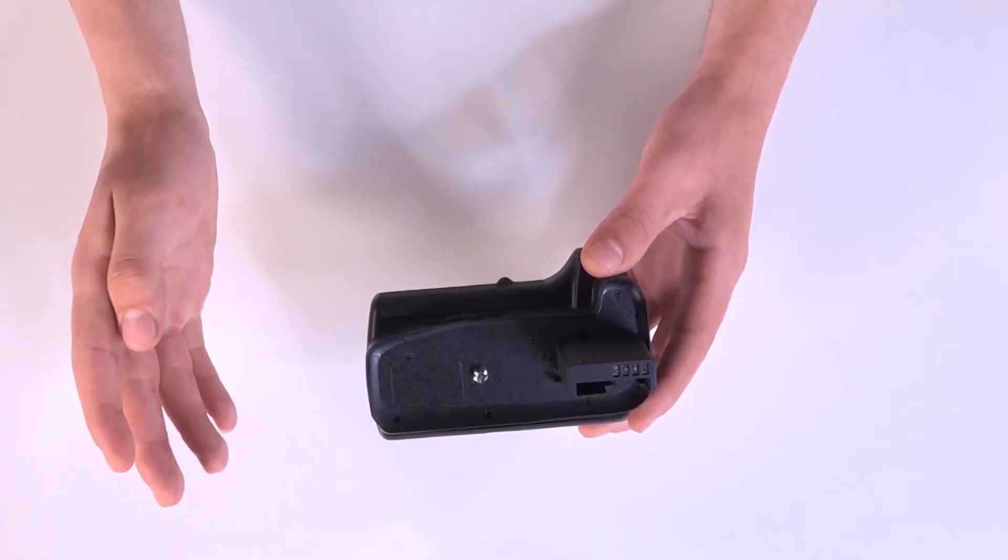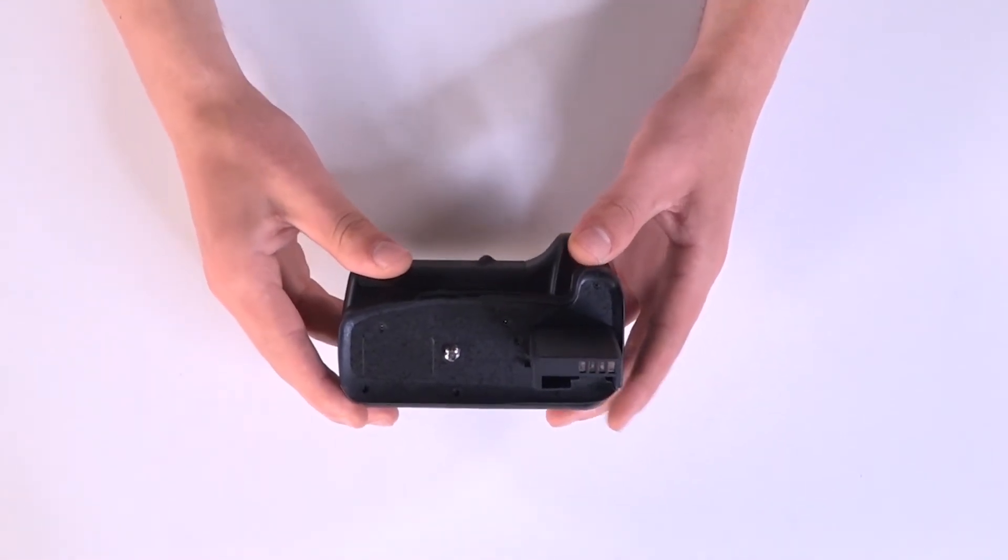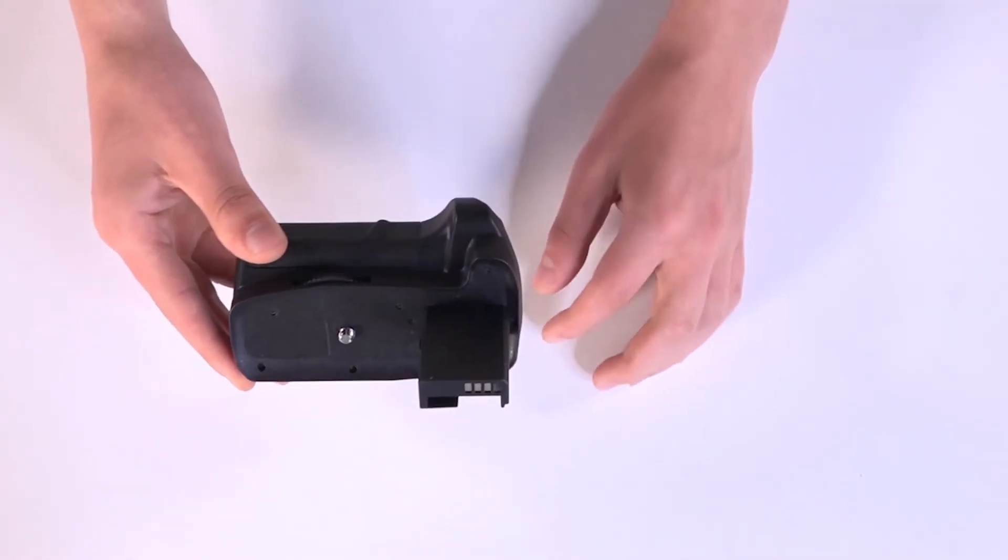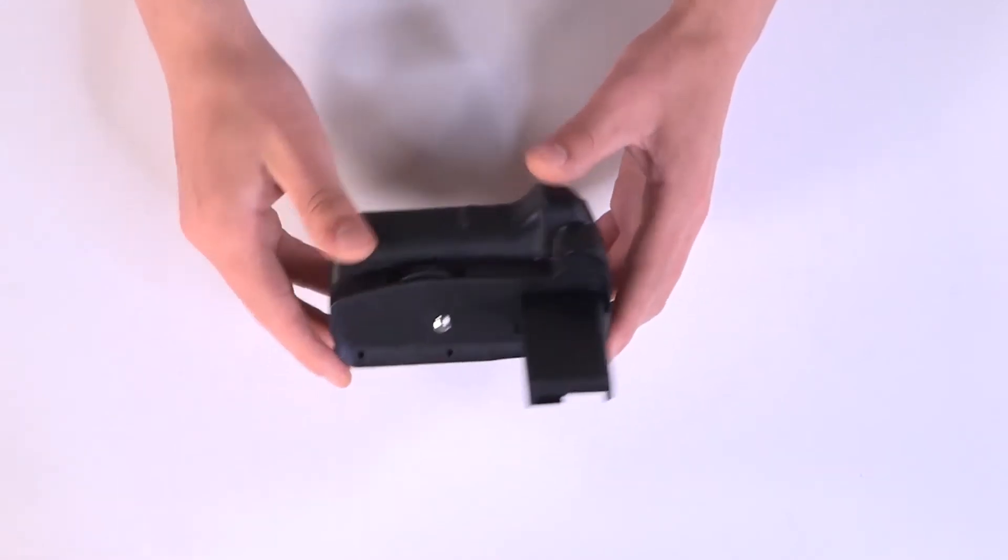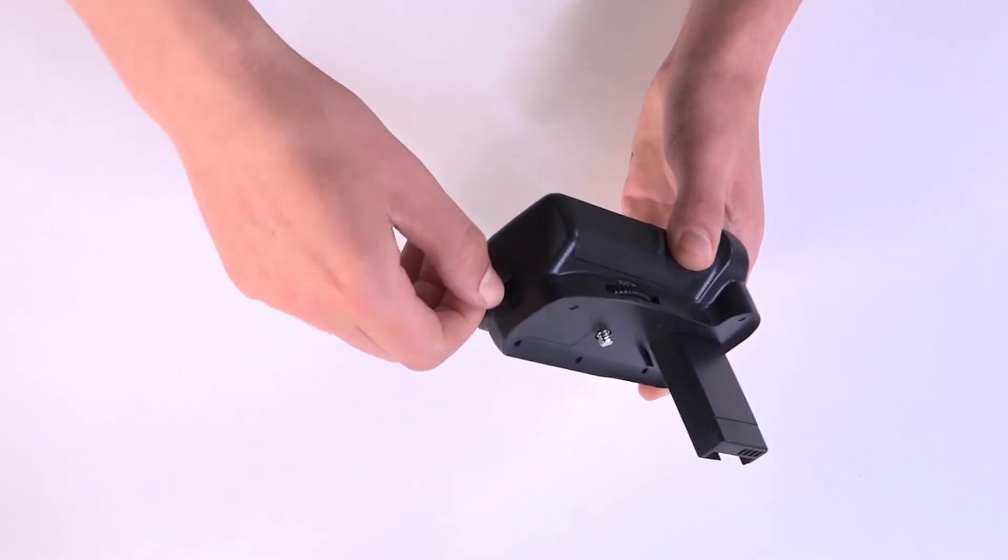Then you open the battery chamber, remove what is on the top of it, and connect this part of the extra battery in the battery chamber of the camera. Then you connect the camera and the battery with a wire through this hole.